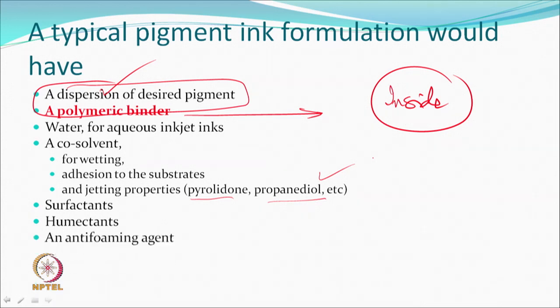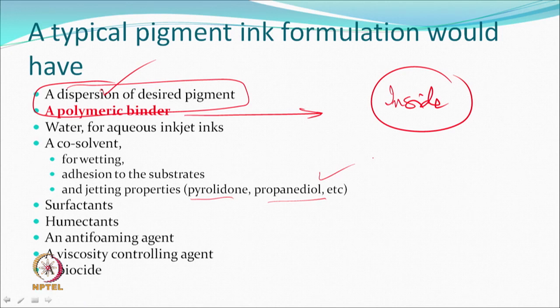Other components include an anti-foaming agent, since the ink is impacted at very high frequency in the chamber and foam is undesirable. A viscosity controlling agent — a polymer — is added to control viscosity. A biocide is needed for the long shelf life, to prevent biodegradation or biological growth over years of storage.